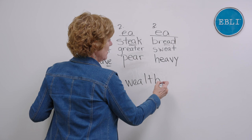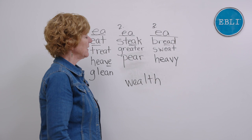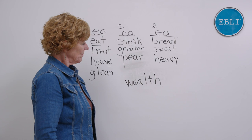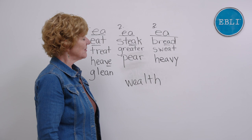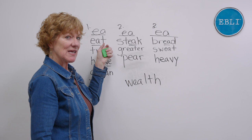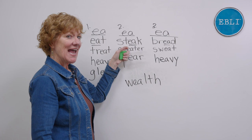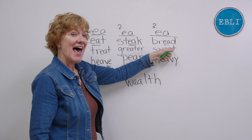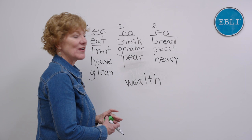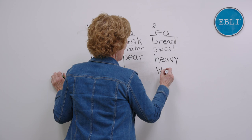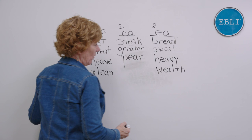What do you suppose this word is? Try it with 'e,' 'a,' and the short sound. Did you get 'wealth'? Which column? 'Wealth... eat' — nope. 'Wealth... steak' — nope, just go to the vowel. 'Wealth... bread' — they rhyme, don't they! So 'wealth' goes over here with 'bread.' Say the sounds as you write 'wealth' — W-E-A-L-T-H. Beautiful!